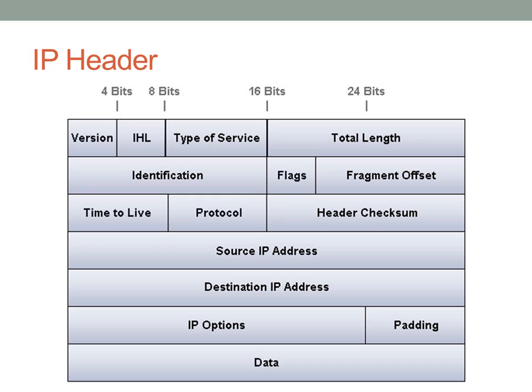This is the IP header and as you can tell there's a lot of different information in this header. For those who may be unfamiliar with reading header diagrams, the header starts in the upper left corner with the version, IHL, type of service, and so forth. Every line is represented as 32 bits of data, so eight bytes, and it wraps around ending with the data at the lower right.